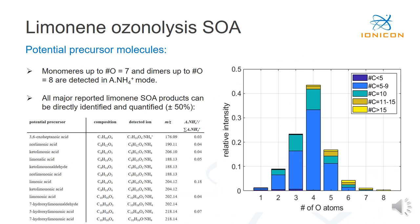Looking in more detail at the ion distribution in ammonium mode: on the right side I have plotted the number of oxygens versus relative intensities, color-coded by number of carbons. Most compounds have four oxygens and five to nine carbons — including limonic acid, the dominant ion in the mass spectrum. Notably, we can detect up to seven oxygens in monomer-region molecules and up to eight oxygens in dimer-region molecules. Almost all major reported limonene secondary organic aerosol products can be directly identified and quantified in ammonium mode with an accuracy of a factor of two.